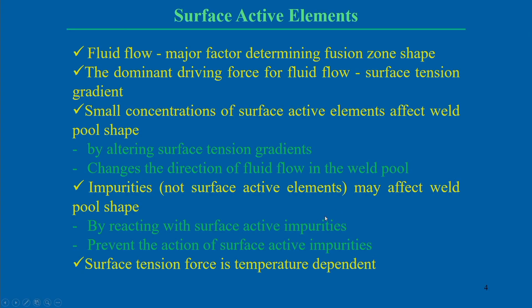There are two ways surface active elements influence metal flow. First, by altering the surface tension gradient and changing the direction of fluid flow within the weld pool. Second, impurities may also exist within the material during welding — impurities are not surface active elements but may affect weld pool shape differently: by reacting with surface active impurities and influencing weld pool shape, or by preventing the action of surface active impurities. Both interactions are possible.